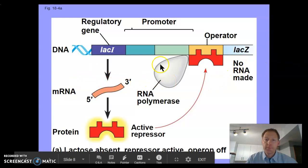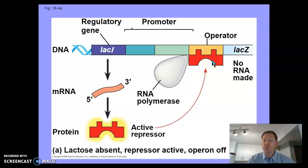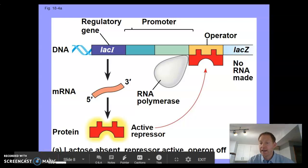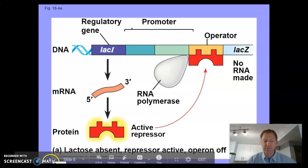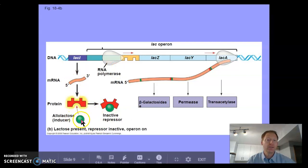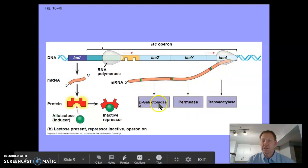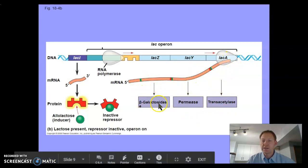Here's another example called the lac operon, which is similar but opposite. The active form of the repressor is without anything attached, so when the regulatory protein is active it blocks the operator — and that's because you have no lactose in your cells. Why produce genes that break down lactose if there's no lactose? When lactose is present in the cell, it binds to the repressor and turns it inactive. Now you can turn the operon on and make all the proteins necessary for breaking down lactose. Why would you make these unless you have lactose present? It's a nice little system.